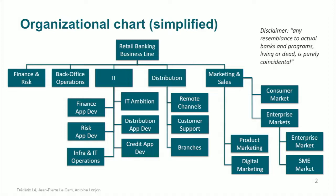The siloed organization presented here is very similar to many bank organizations. That organization does not facilitate outside-in thinking and does not facilitate cross-functional collaboration. Therefore, the bank is slow to collect weak signals, give meaning to them, and respond rapidly. When the bank has to change, it changes through waterfall programs that focus on the run side and take a lot of time to deliver.